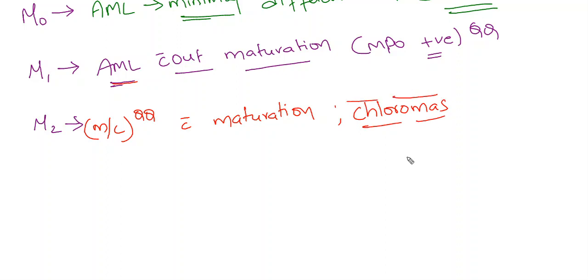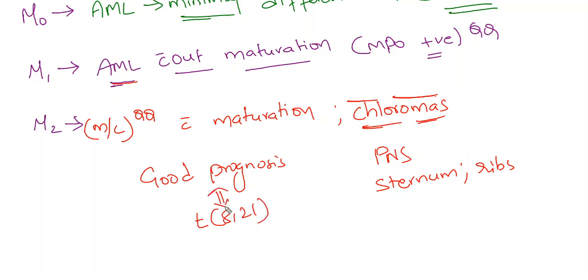You have to remember this chloromas. These are the proliferation of myeloblasts in extramedullary sites, collection or proliferation in extramedullary sites like paranasal sinuses, sternum, ribs, etc. This is associated with a good prognosis and the translocation here will be t(8;21). This is a good prognosis.